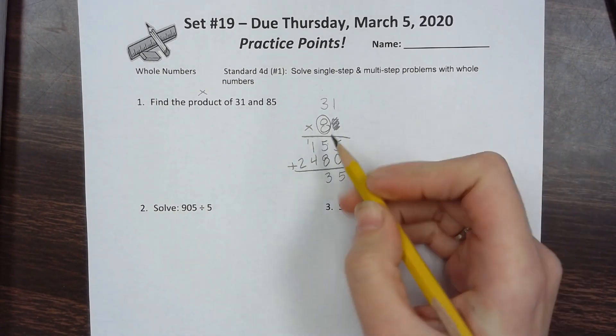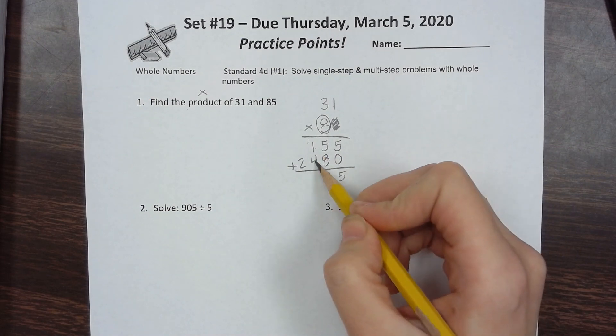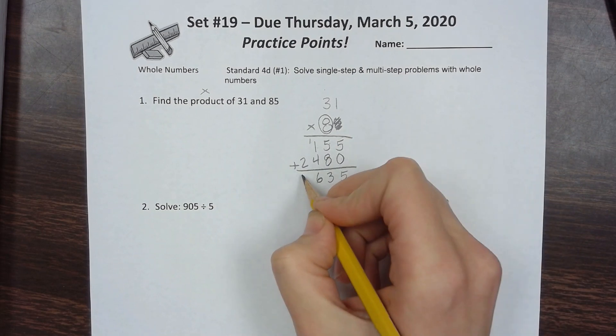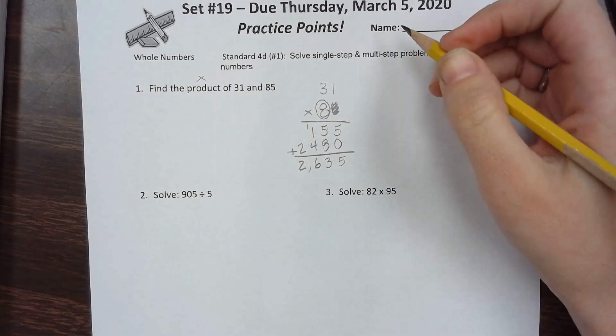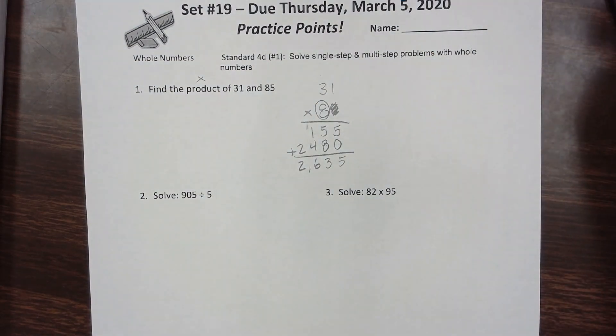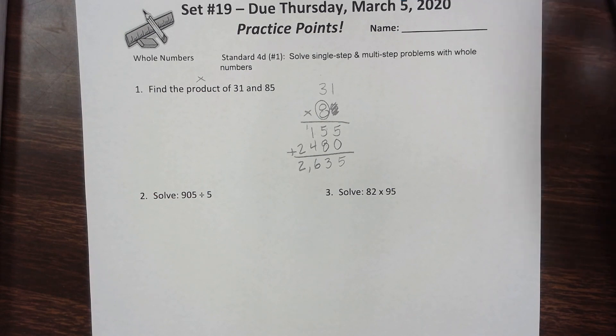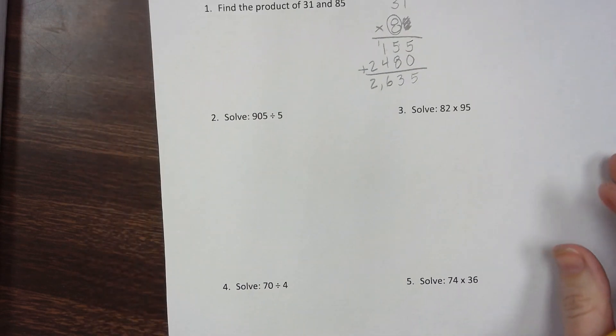1 plus 1 is 2, plus 4 is 6, and the 2 comes down. So the product of 31 and 85 is 2,635.